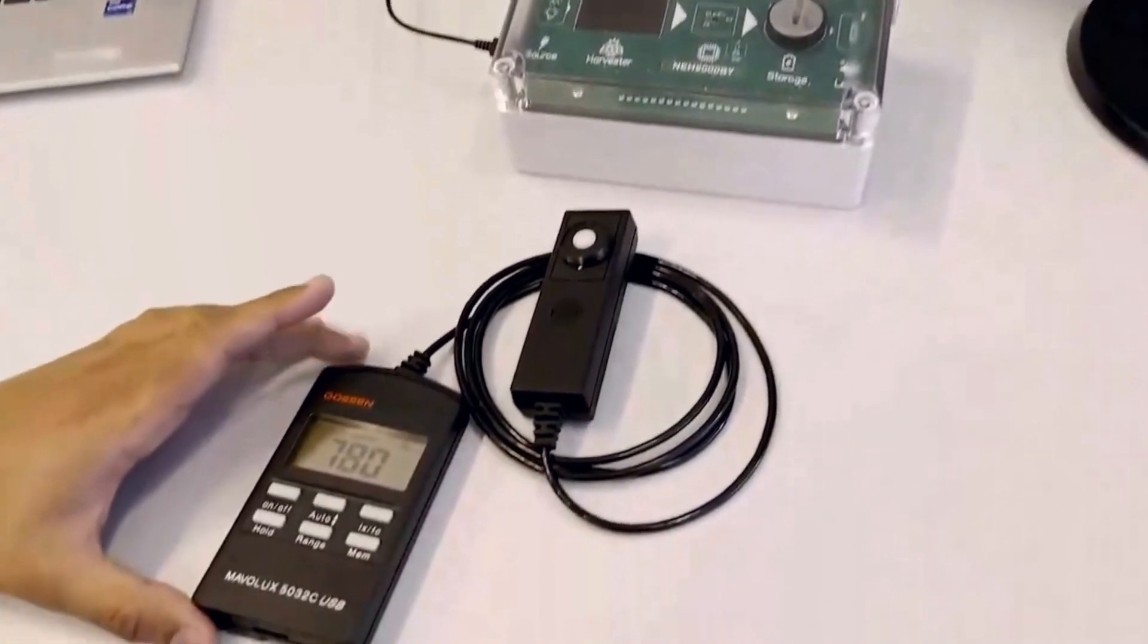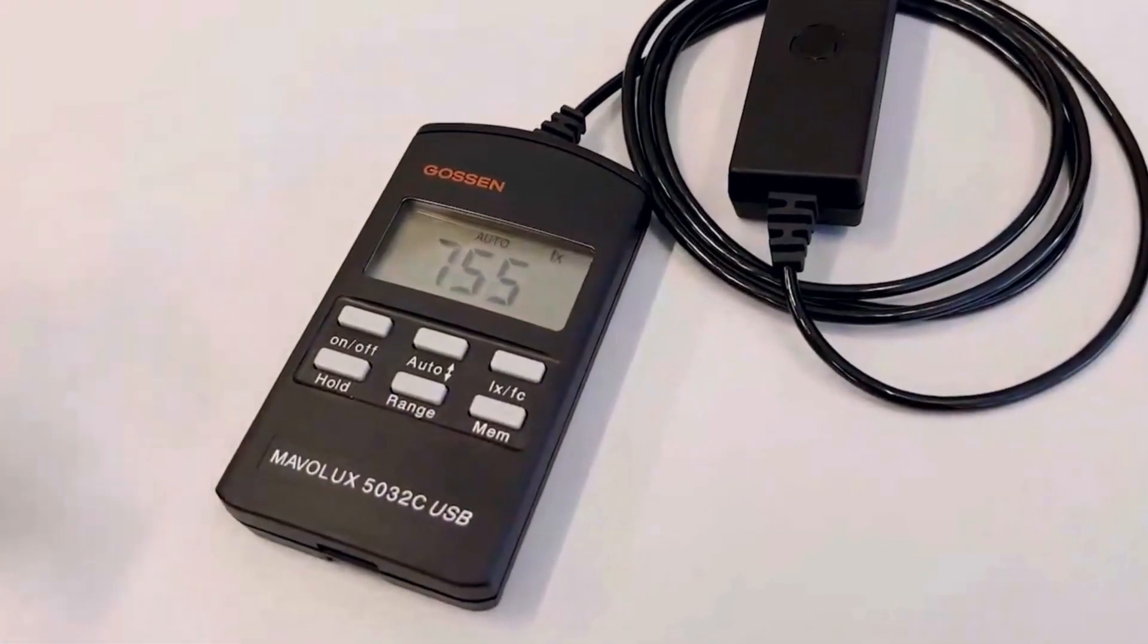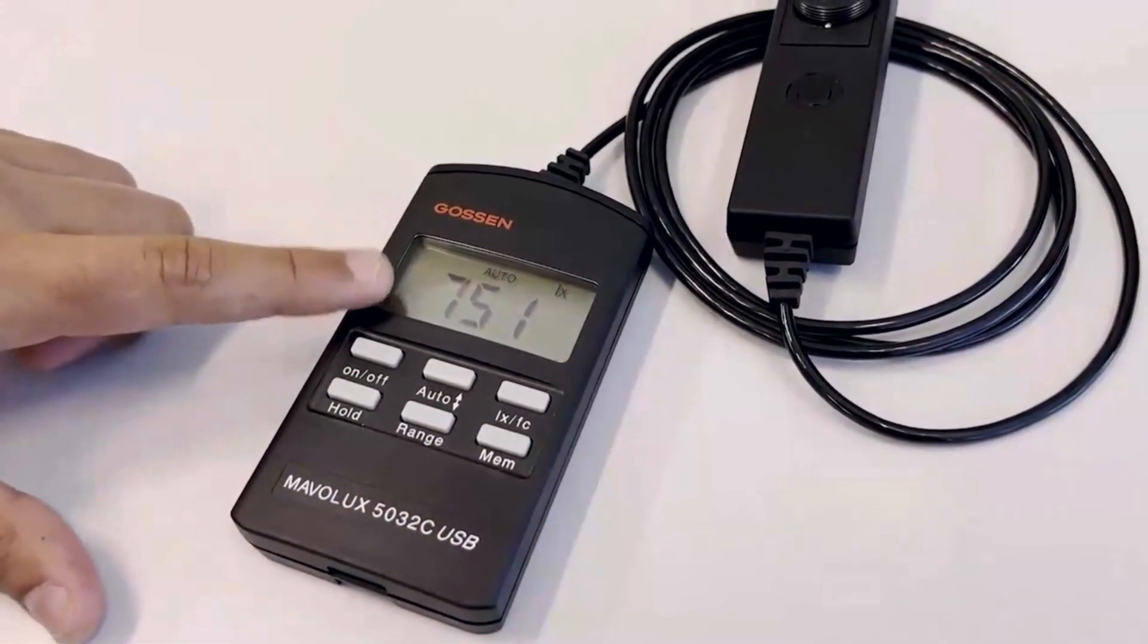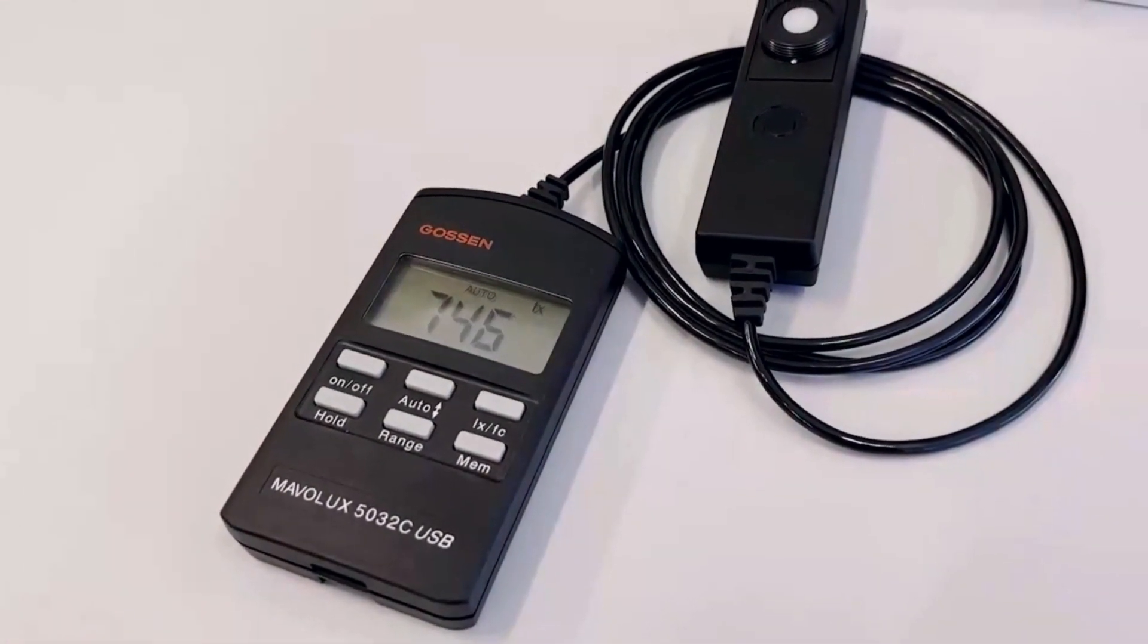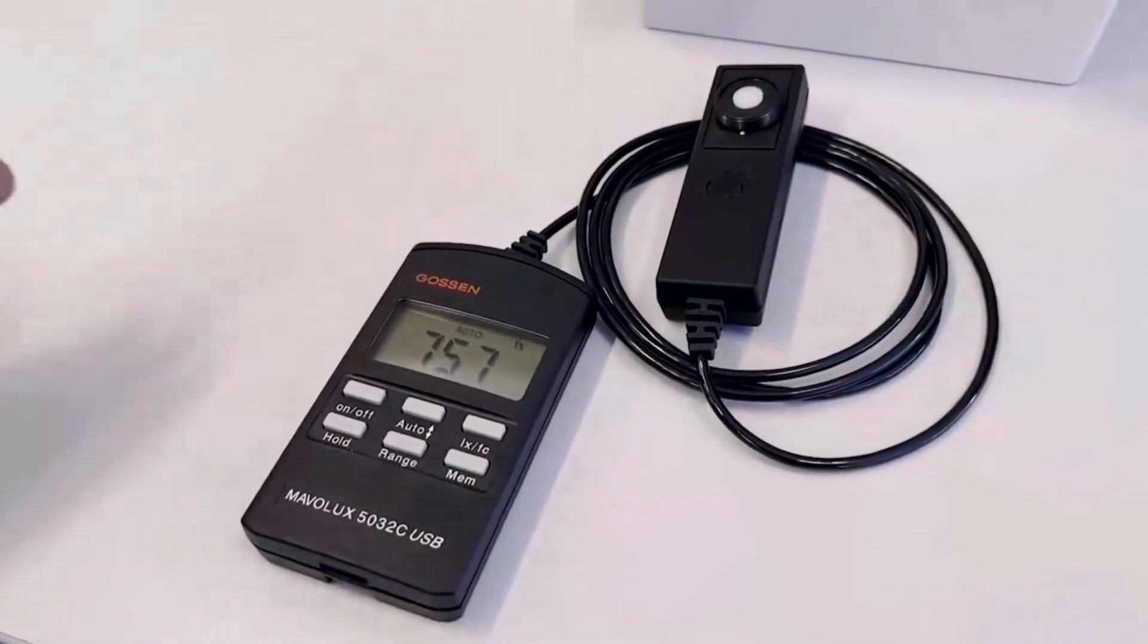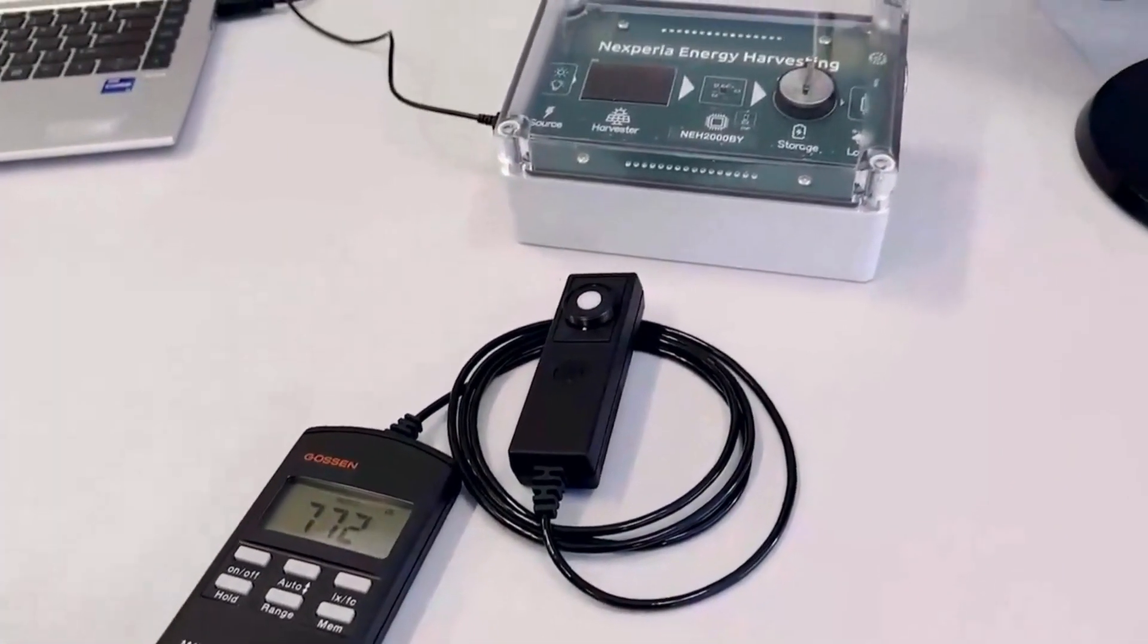This device is the lux meter. The idea of this device is to measure the light intensity. So right now we are at 700 lux, 750. Okay, so this system is generating energy right now under this light.